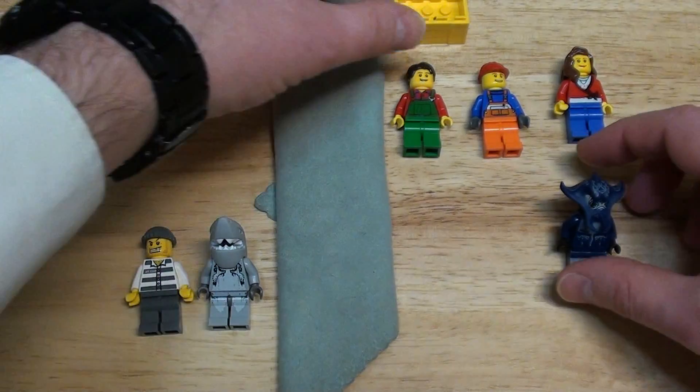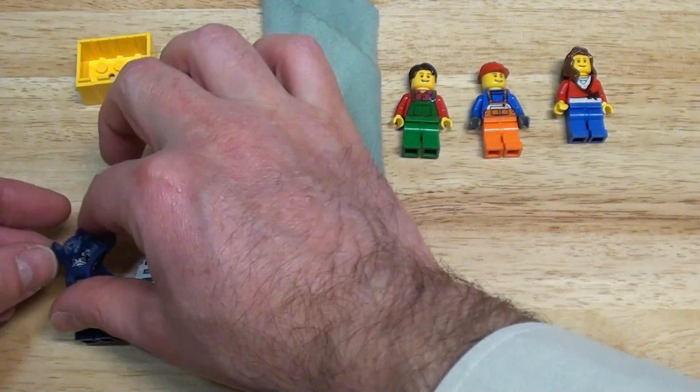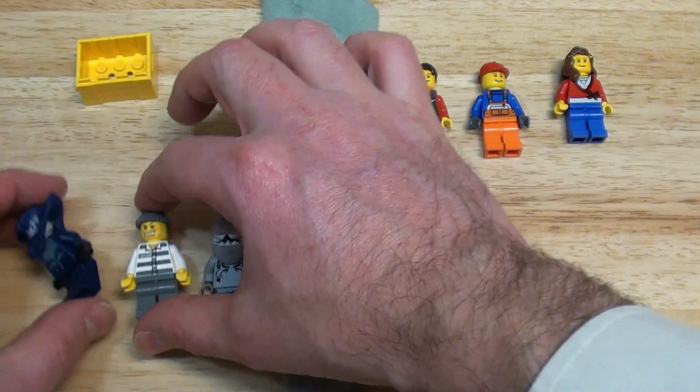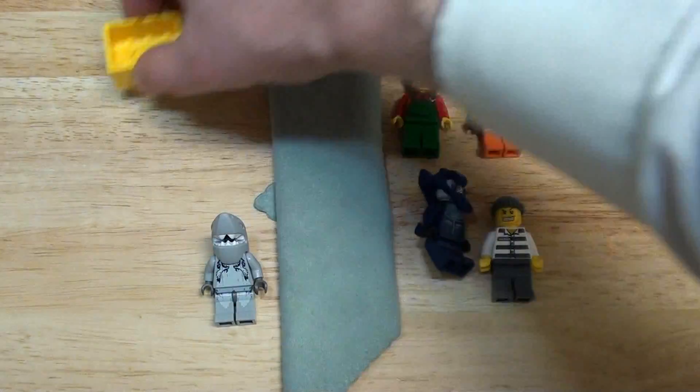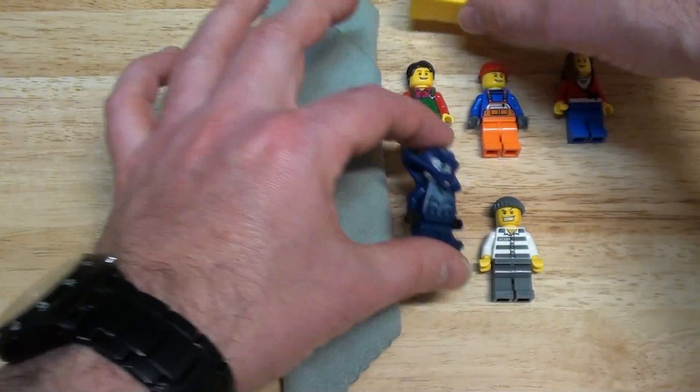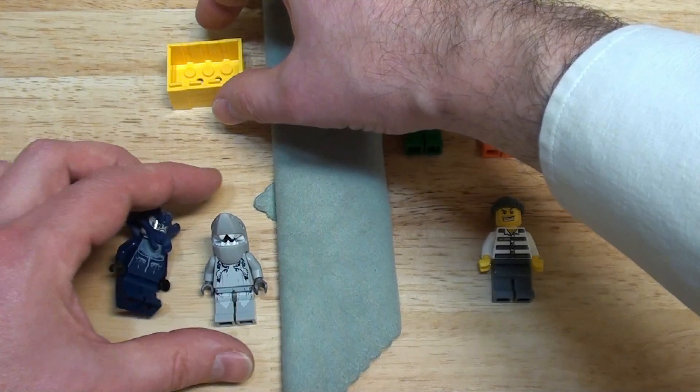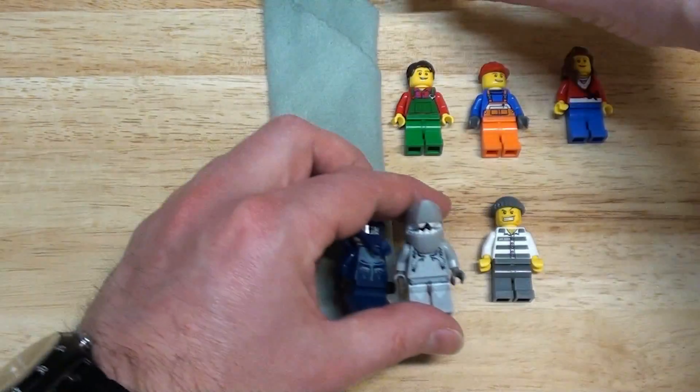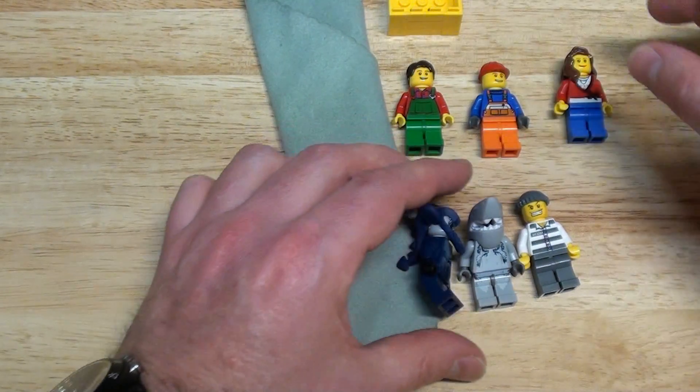And finally, this troll is coming back here to take with him one of his friends. And the boat is here. And of course, one troll goes back and gets his friend. And there, they have all crossed the river together.